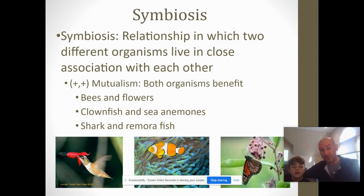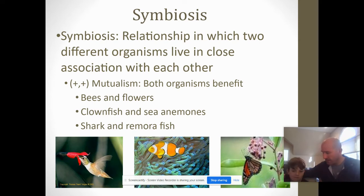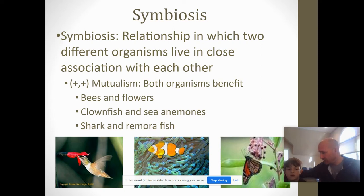Symbiotic relationships: symbiosis is a relationship in which two different organisms live in close association with each other. One type is mutualism — a symbiotic relationship where both organisms benefit from that relationship. They both are helped by it.